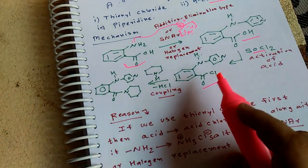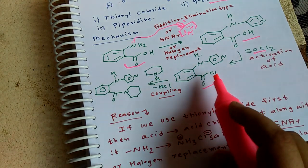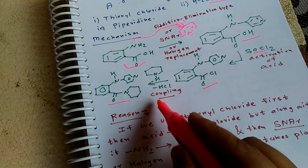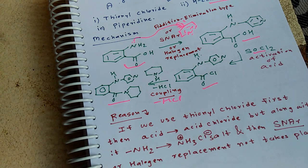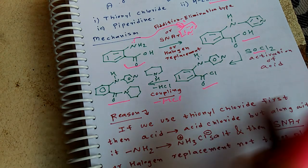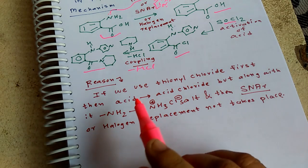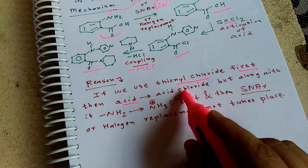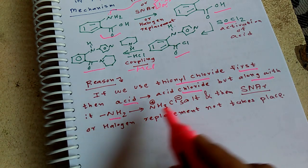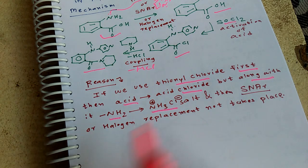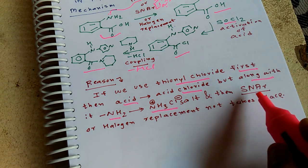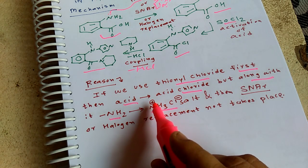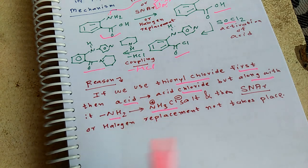When SOCl2 is used, it converts the carboxylic acid group to an acid chloride. When an acid chloride and an amine are present, coupling occurs and an amide bond forms with loss of HCl. The reason we do not use SOCl2 first is that it would convert the acid to acid chloride but also convert the NH2 to its salt, and once that salt forms, the SNAr reaction or halogen replacement cannot take place because the lone pair on nitrogen is consumed.